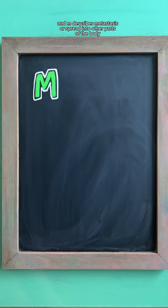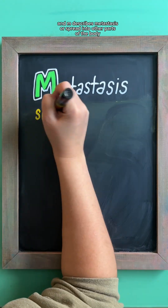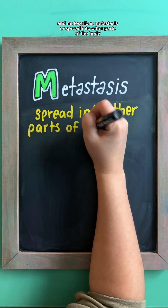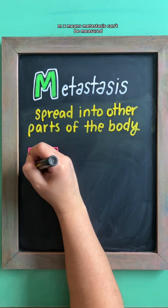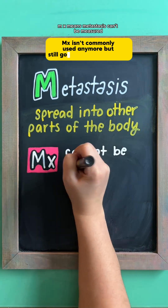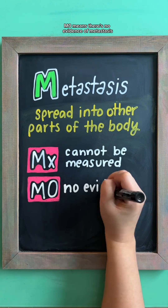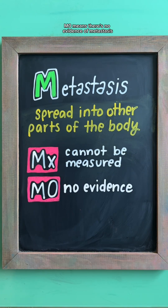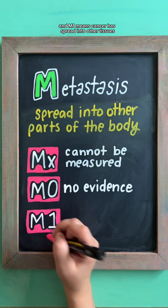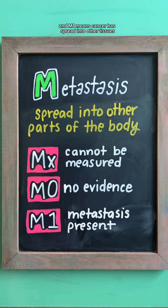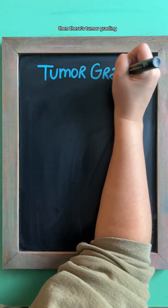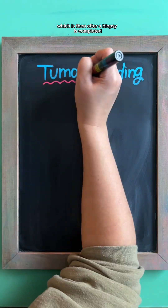And M describes metastasis, or spread into other parts of the body. MX means metastasis can't be measured. M0 means there's no evidence of metastasis. And M1 means cancer has spread into other tissues.